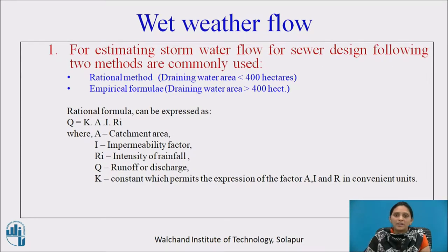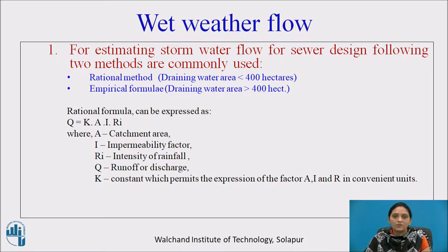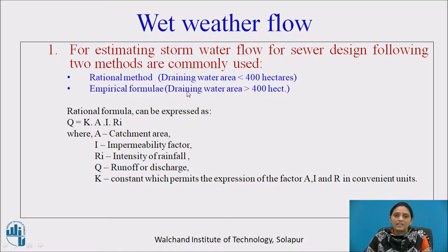For estimating stormwater flow for sewer design, two methods are commonly used. The rational method is used when the drainage area is less than 400 hectares, and the empirical formula is used when the drainage area is more than 400 hectares.